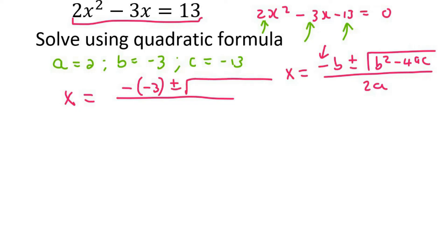Then I say plus minus. Now b is -3, but I must always use a bracket wherever I plug something in. a is 2, c is -13, like that, and then at the bottom I've got 2 times a, which is 2.